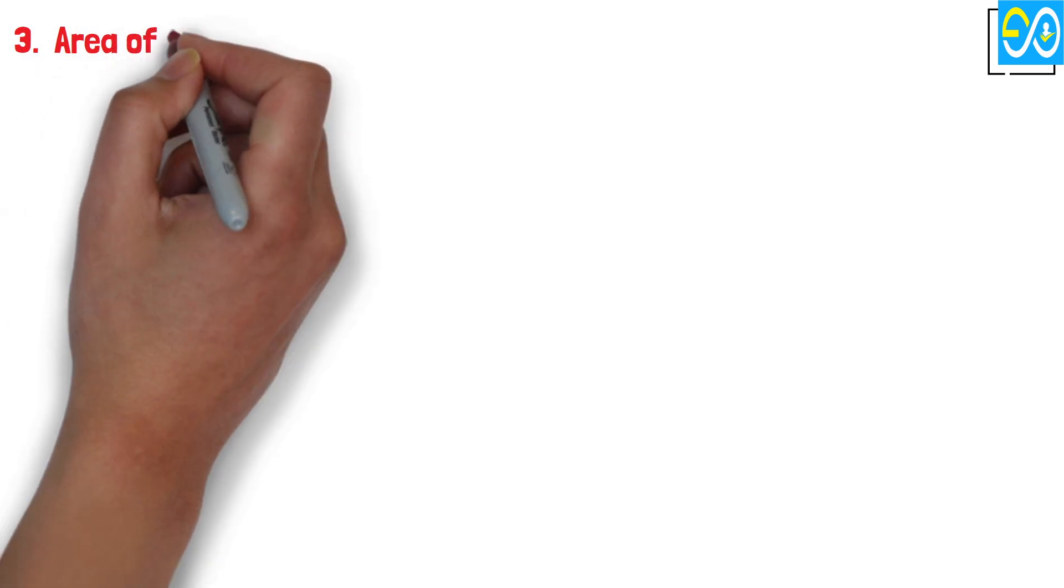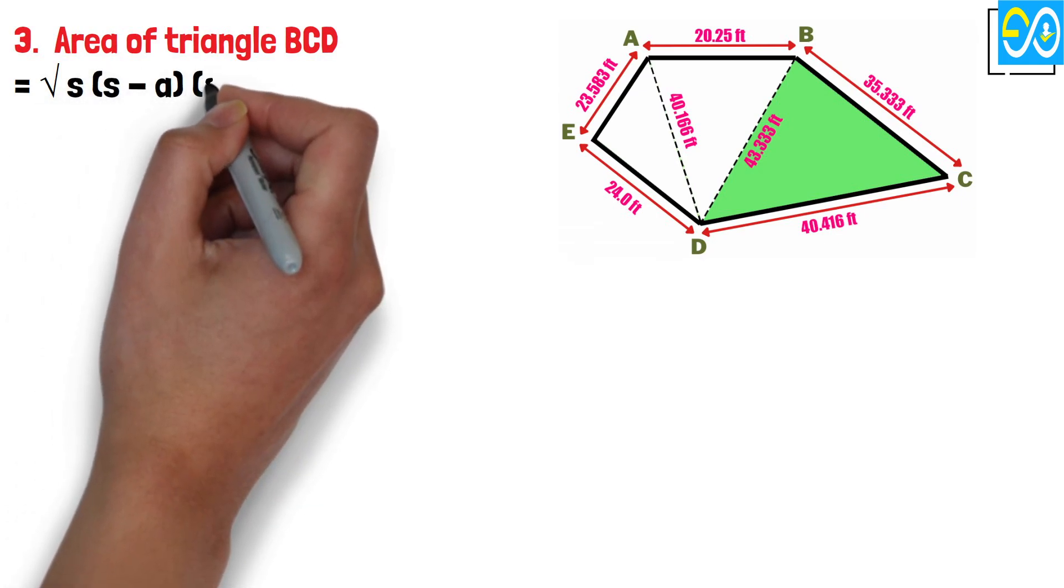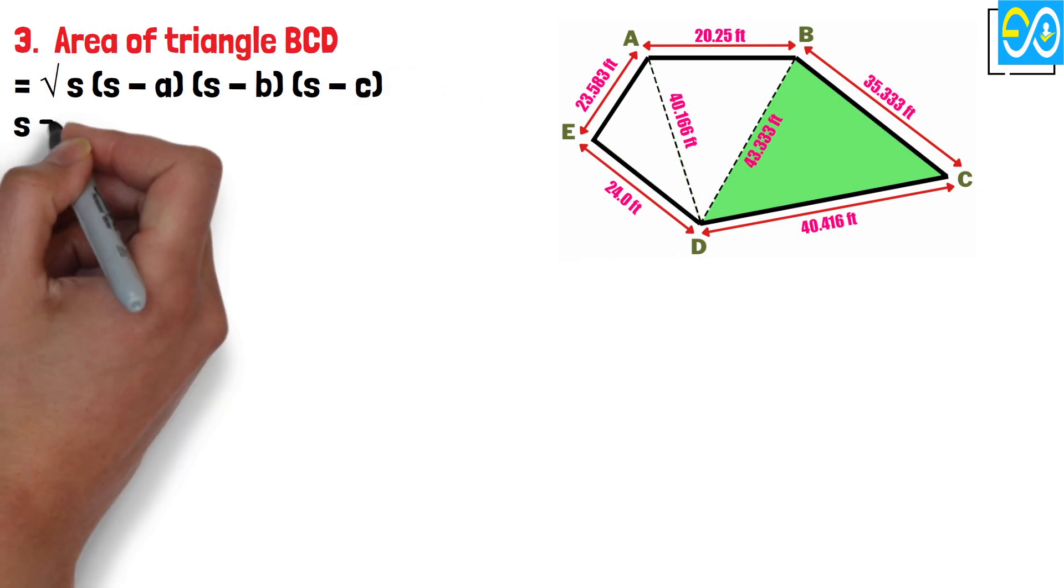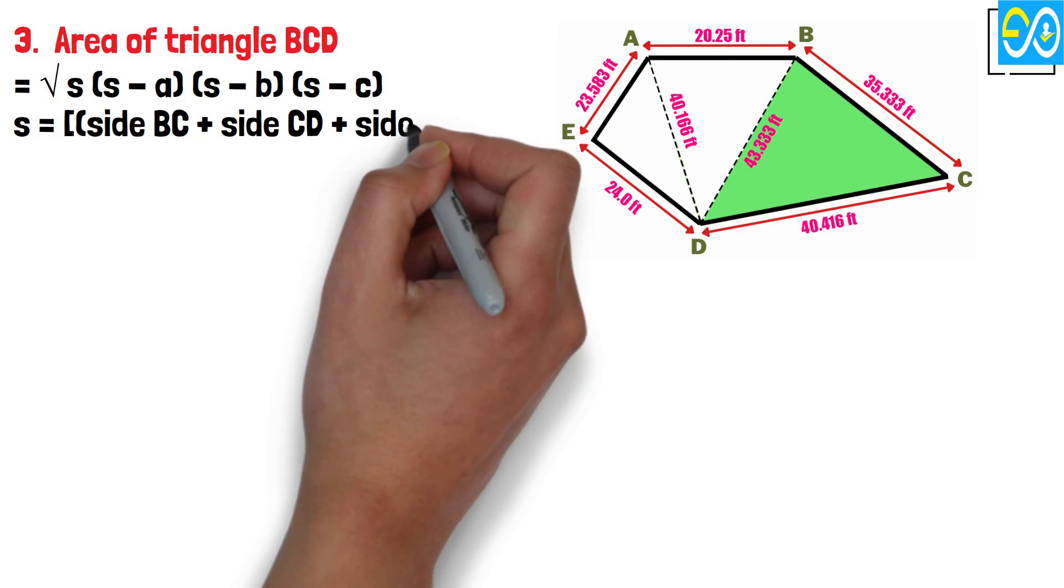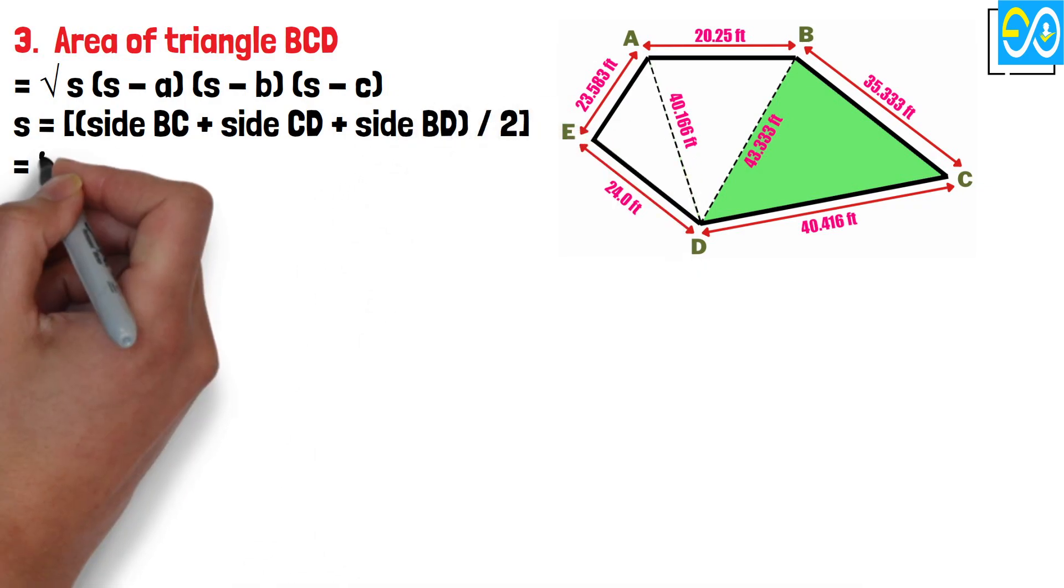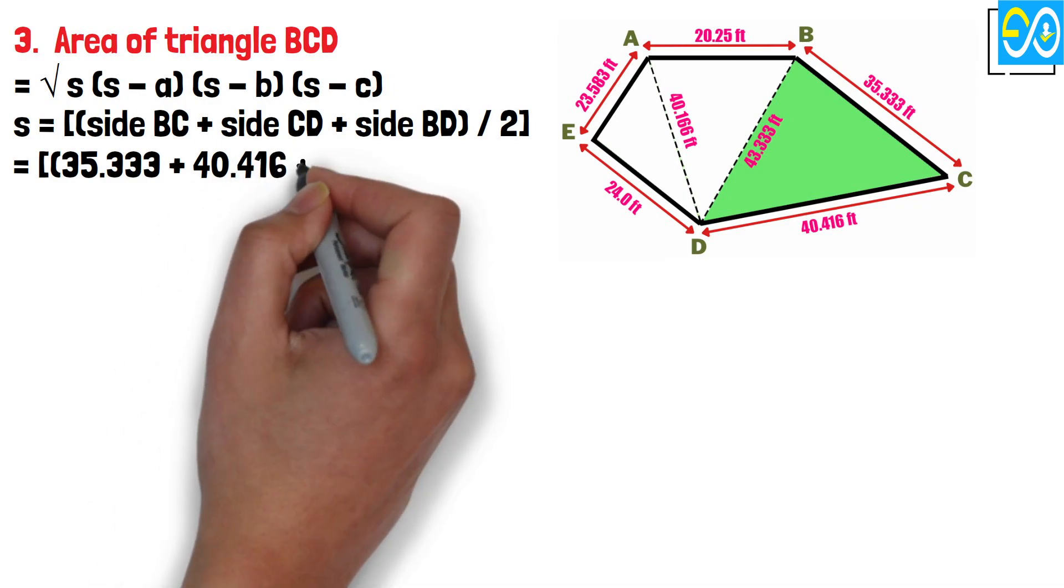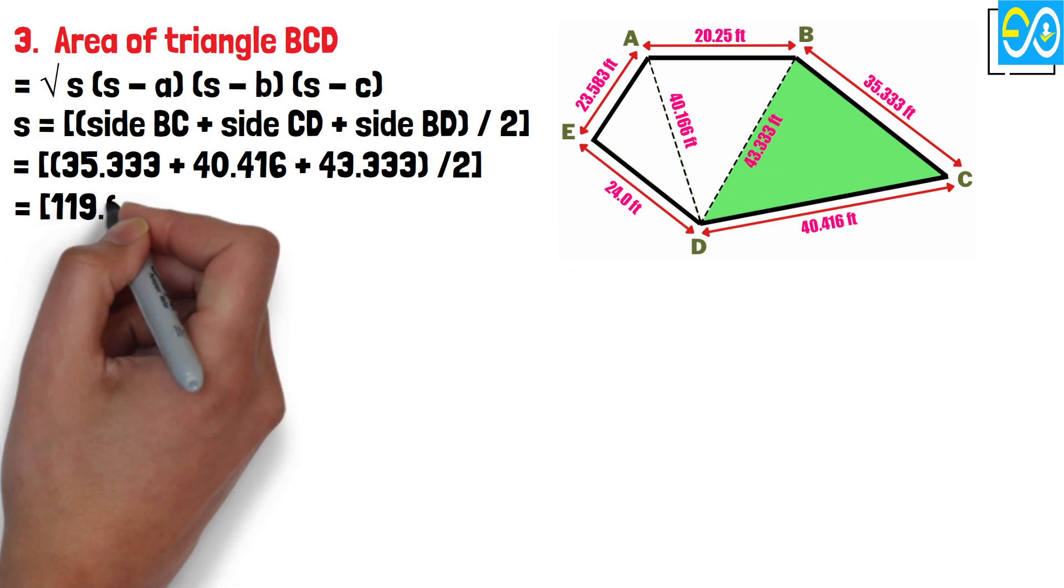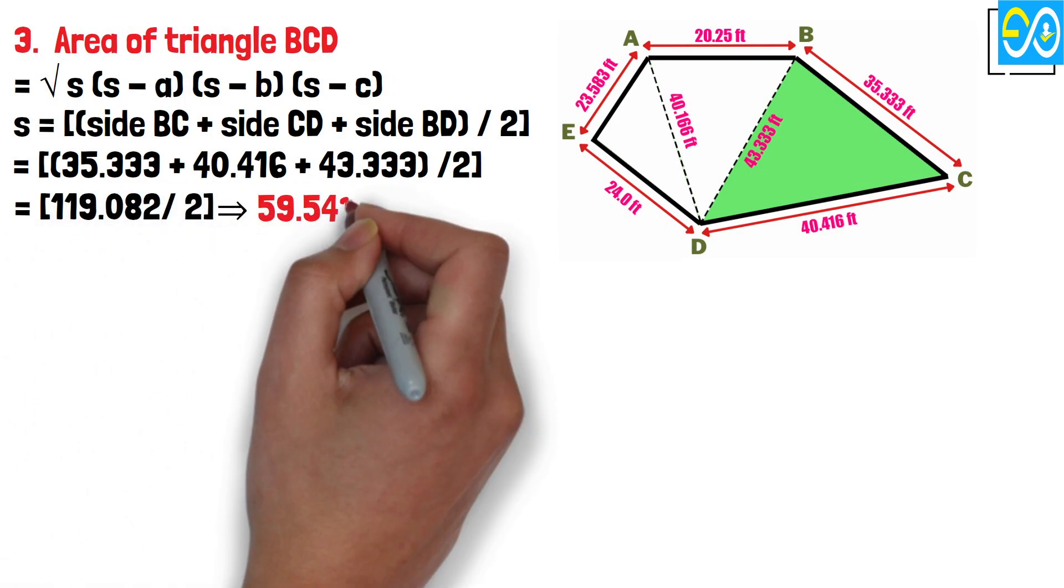3. Area of triangle BCD equals square root S times (S minus A) times (S minus B) times (S minus C). S equals (side BC plus side CD plus side BD) divided by 2. Equals (35.333 plus 40.416 plus 43.333) divided by 2. Equals 119.082 divided by 2 equals 59.541 feet.